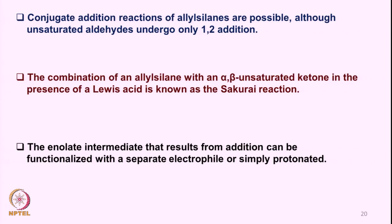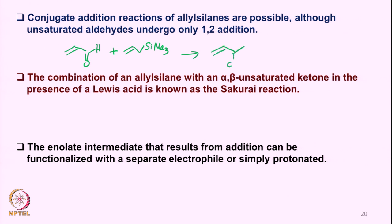Conjugate addition of allylsilanes is also possible, although alpha-beta unsaturated aldehydes typically undergo 1,2-addition. For example, if we have an alpha-beta unsaturated aldehyde and react it with an allylsilane, generally what is observed is 1,2-addition.